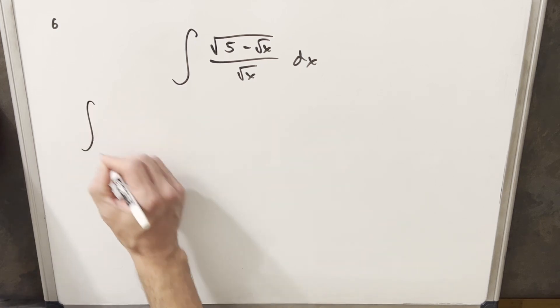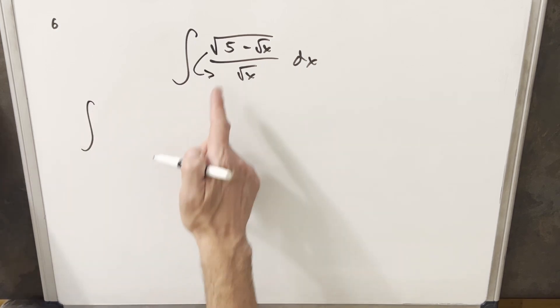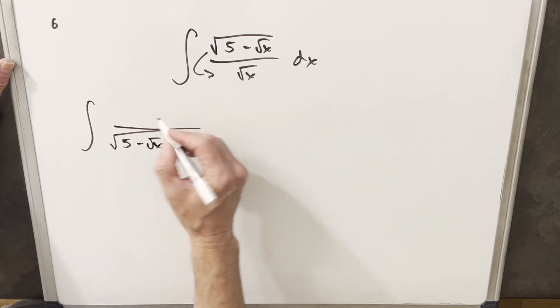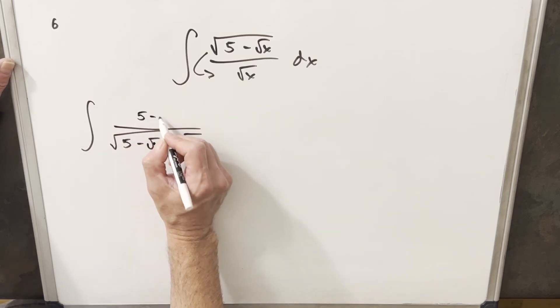I'm going to rewrite this integral a little bit. Instead of writing it, what I want to do is move this radical into the denominator. So we'll write that here, like this, times square root of x. But in order to do that, I'm going to need this in the numerator.